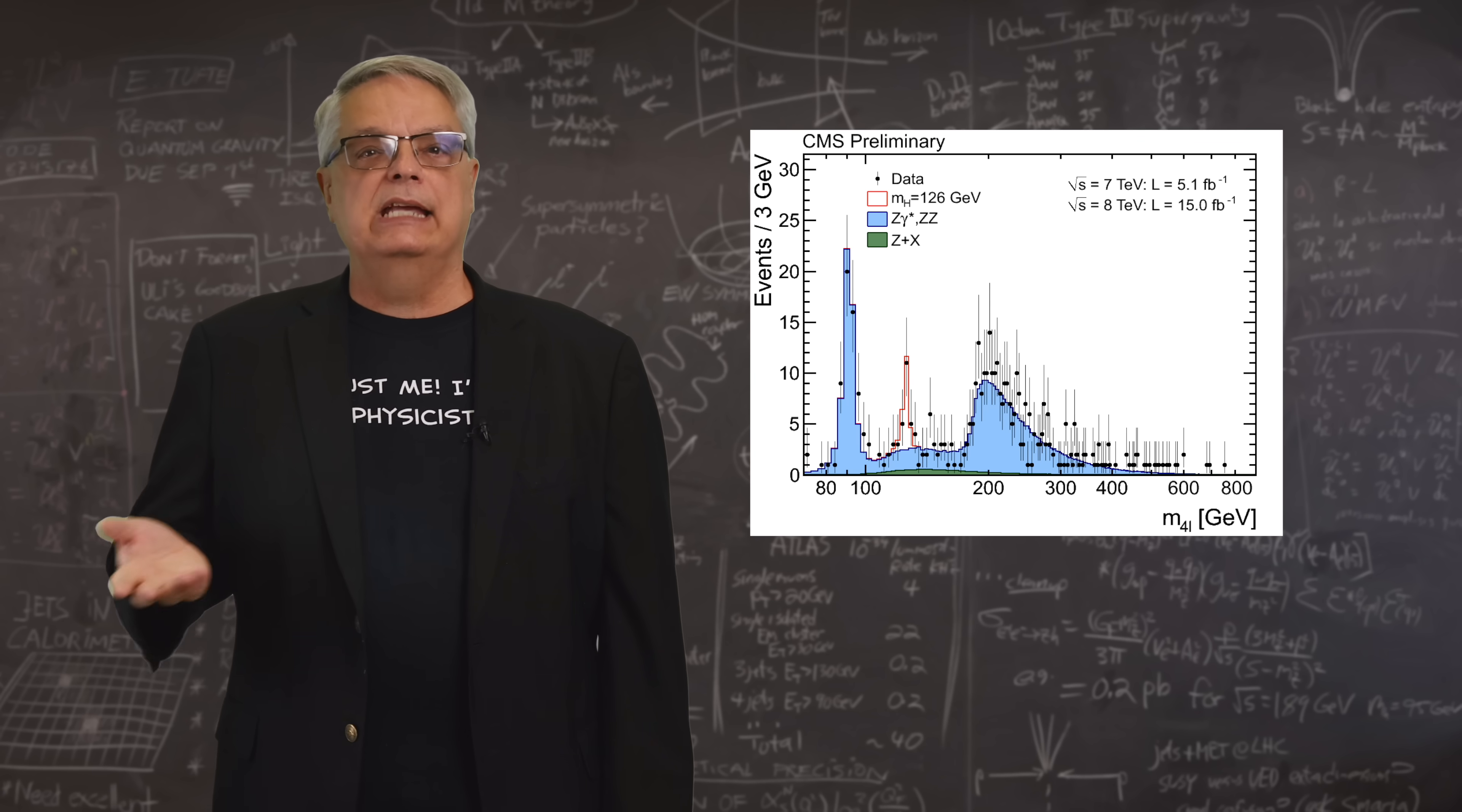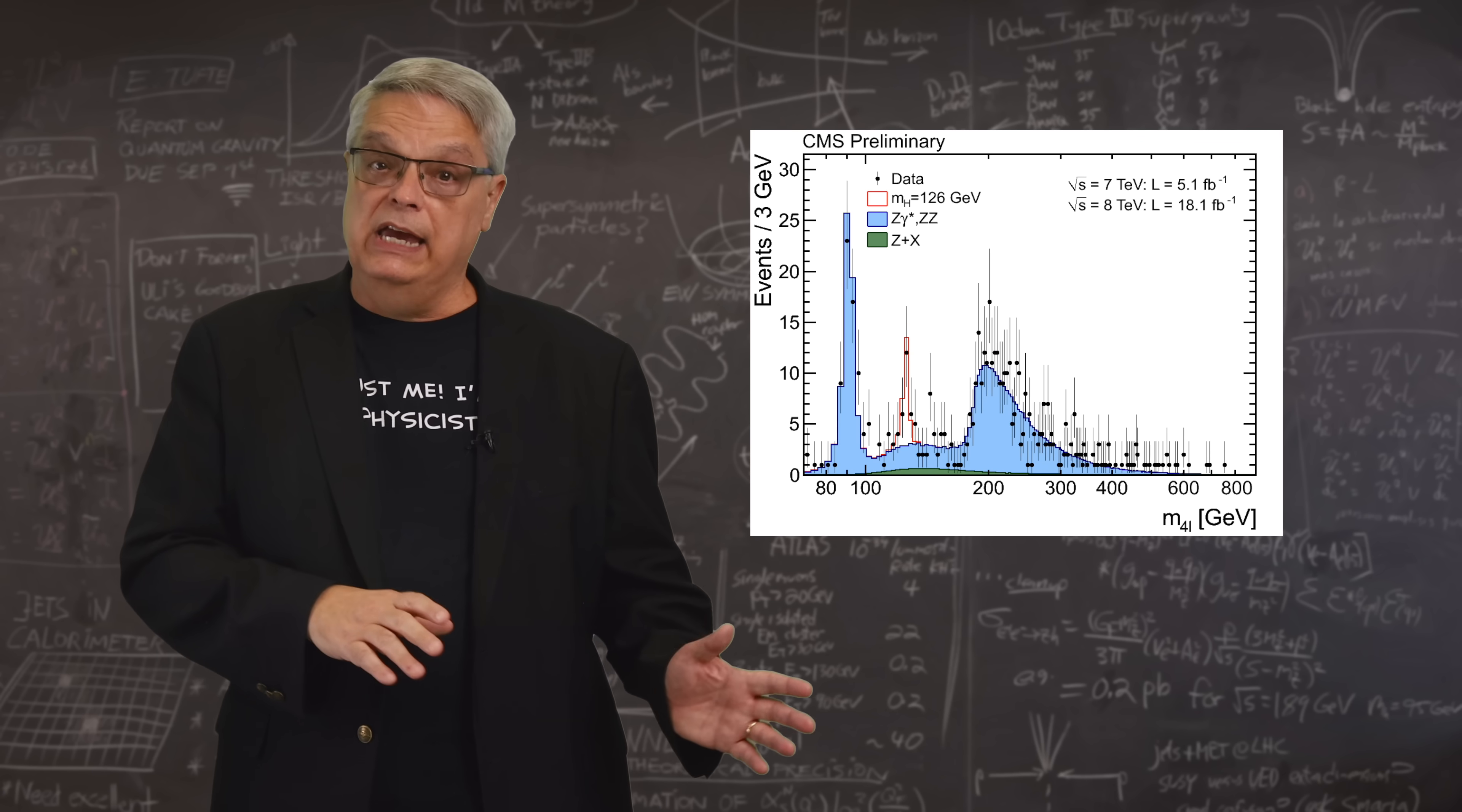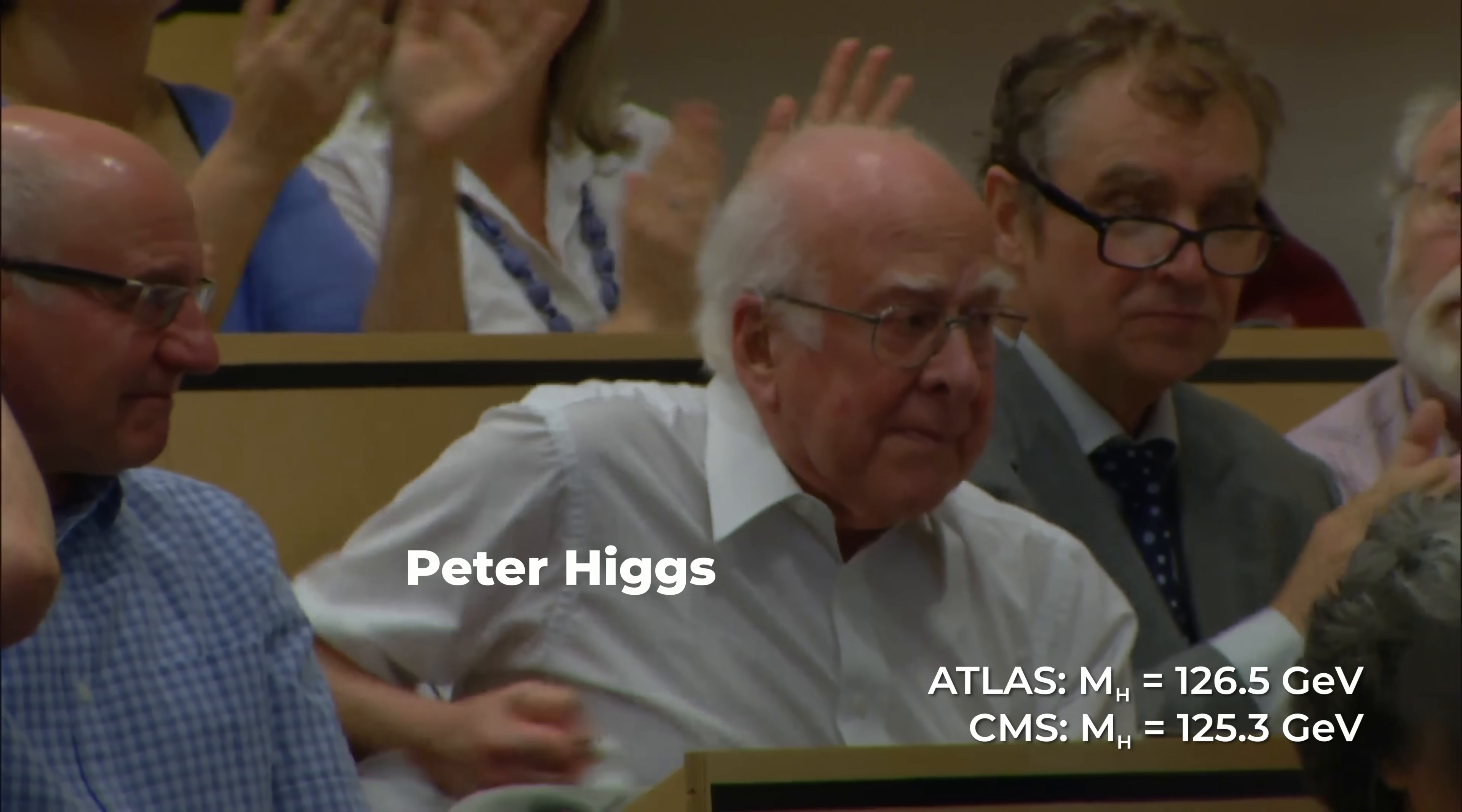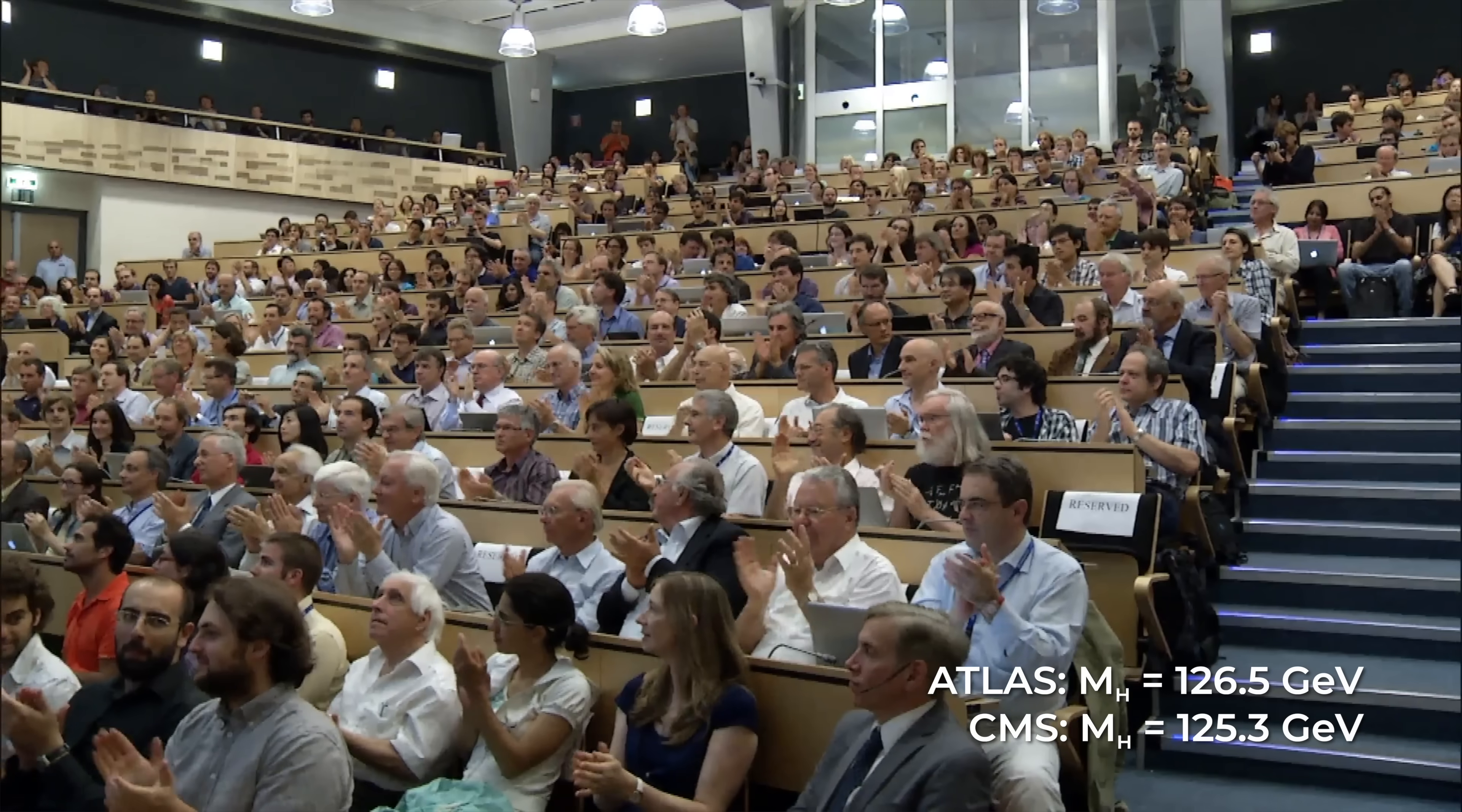So that's basically how scientists search for the Higgs boson using three accelerators over the course of 10 or 15 years. And on July 4, 2012, both of the big LHC experiments jointly announced discovery. Even better, the two experiments agreed with one another.